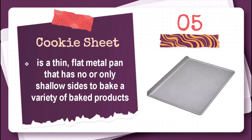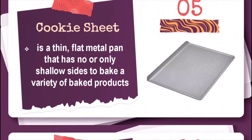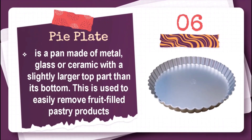Cookie sheet is a thin, flat, metal pan that has no or only shallow sides, used to bake a variety of baked products. Pie plate is a pan made of metal, glass, or ceramic with a slightly larger top part than its bottom. This is used to easily remove fruit-filled pastry products.